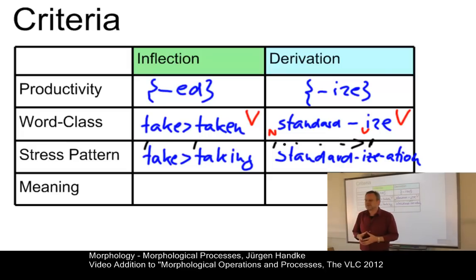The final criterion that keeps derivation and inflection apart is called semantic transparency. Here, we simply wrote down the word meaning. Now, whereas inflection is semantically fully transparent, derivation is not always. So, if we add our past tense morpheme ED, we know that the resulting verb is always in the past. So, the meaning is the past of a particular verb.